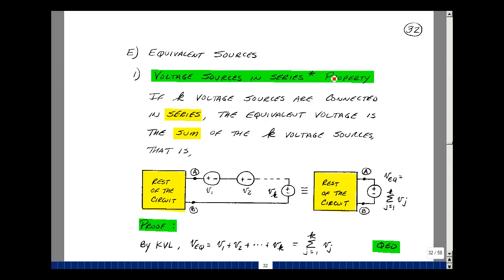Take a look at this first property. This is voltage sources in series. If I take k voltage sources and connect them in series, the equivalent voltage is the sum of the k voltage sources. Now, why would that be true? Well, let's hook up k voltage sources. And then let's find an equivalent voltage using Kirchhoff's voltage law.